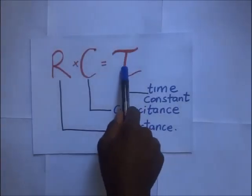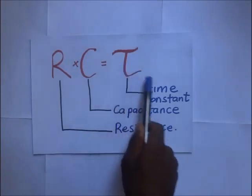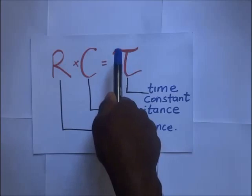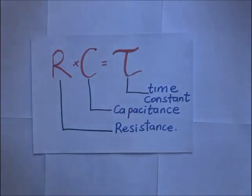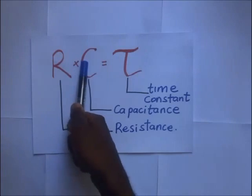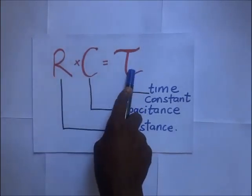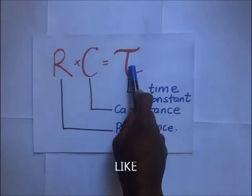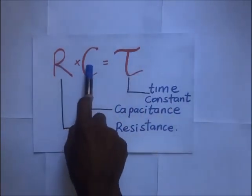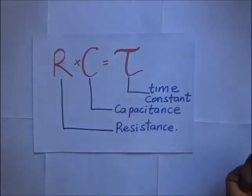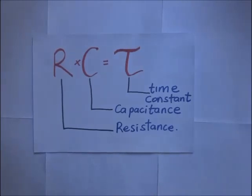R times C gives us a certain constant called the time constant, which characterizes the rate of charging and discharging of the capacitor. If the resistance or the capacitance in the circuit is small, the time constant is small and the rate of charging and discharging will be faster. If both resistance and capacitance are large, their product gives a large time constant, meaning the rate of charging and discharging will be slow.